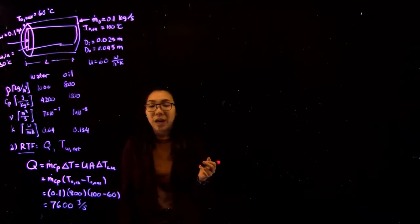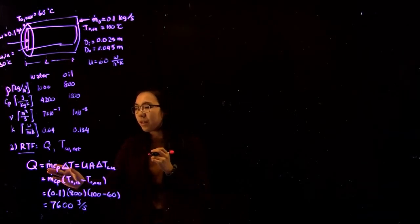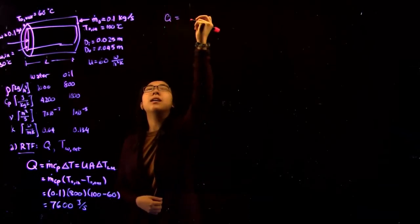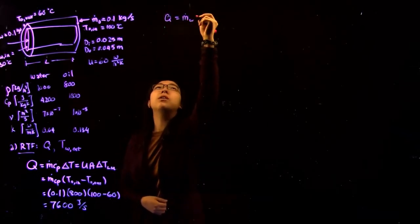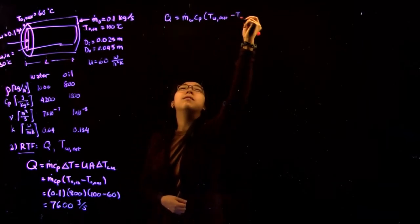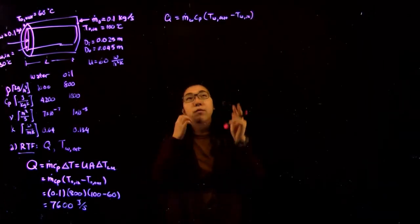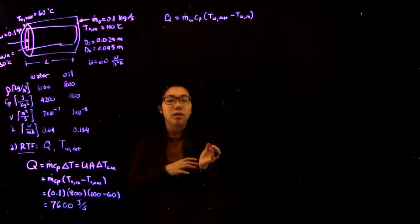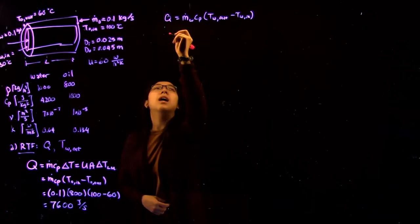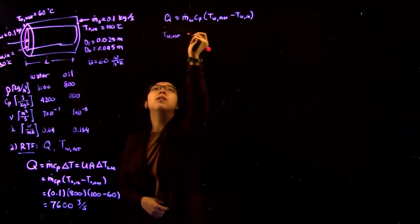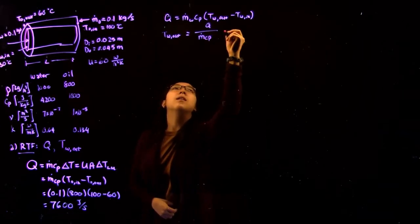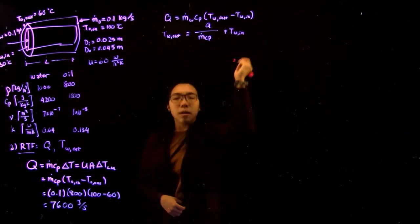The next thing we want to do is find the outlet temperature of the water. So as we said, this equation MCP delta T applies for both fluids. What we can simply say is that Q equals M of the water this time times CP times temperature of the water out minus temperature of the water in. We've flipped the in and out because I'm choosing the hotter temperature minus the cooler temperature, since we're looking at the magnitude of heat that's transferred. This means that temperature of the water out can be isolated: Q over MCP plus temperature of the water in.